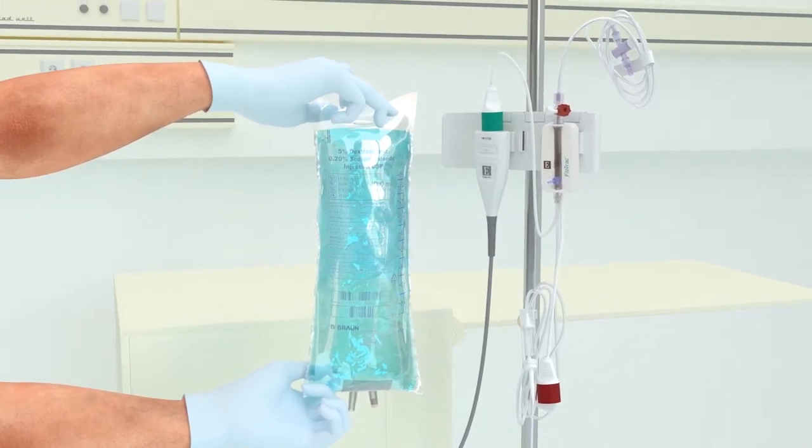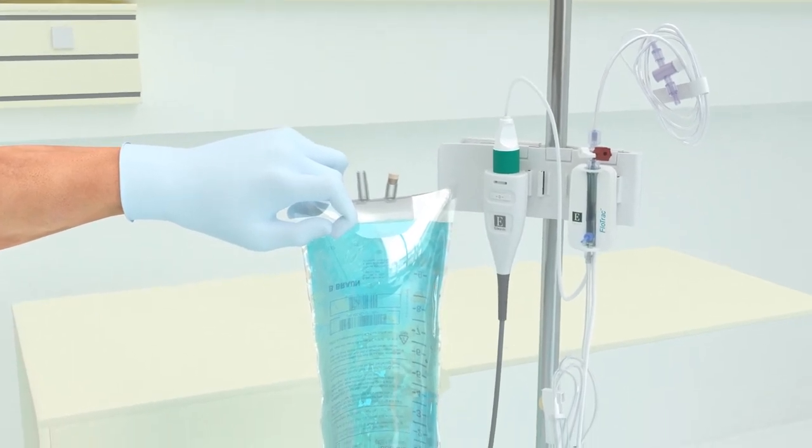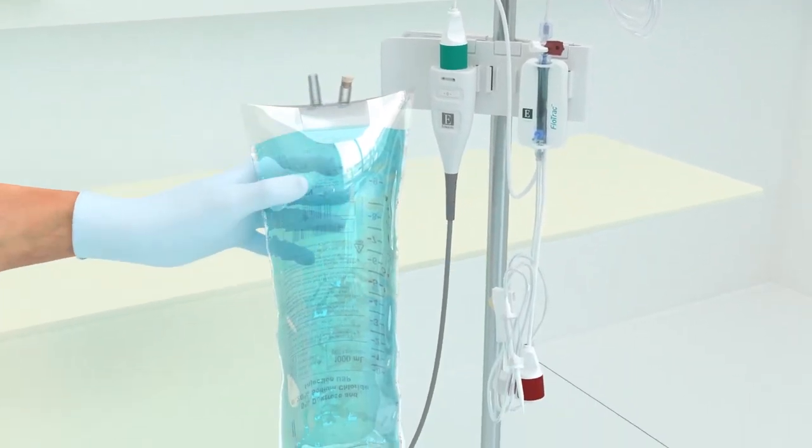To remove the air and prime the FlowTrack system, invert the fluid bag. Spike the fluid bag.